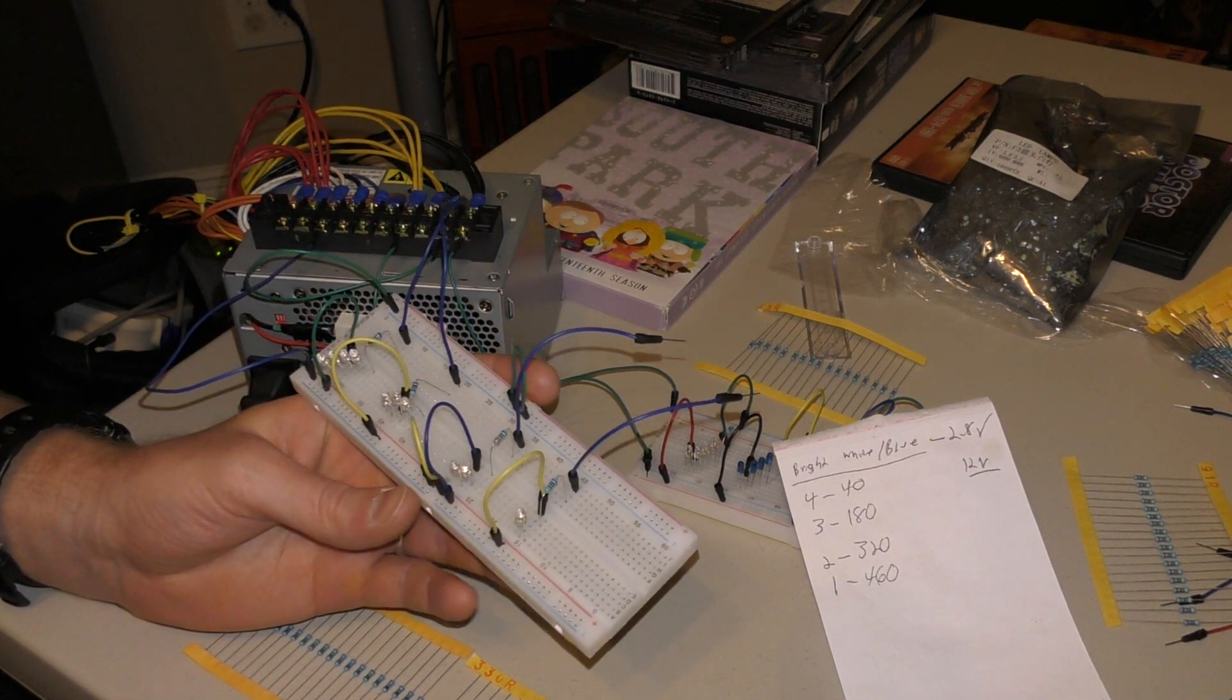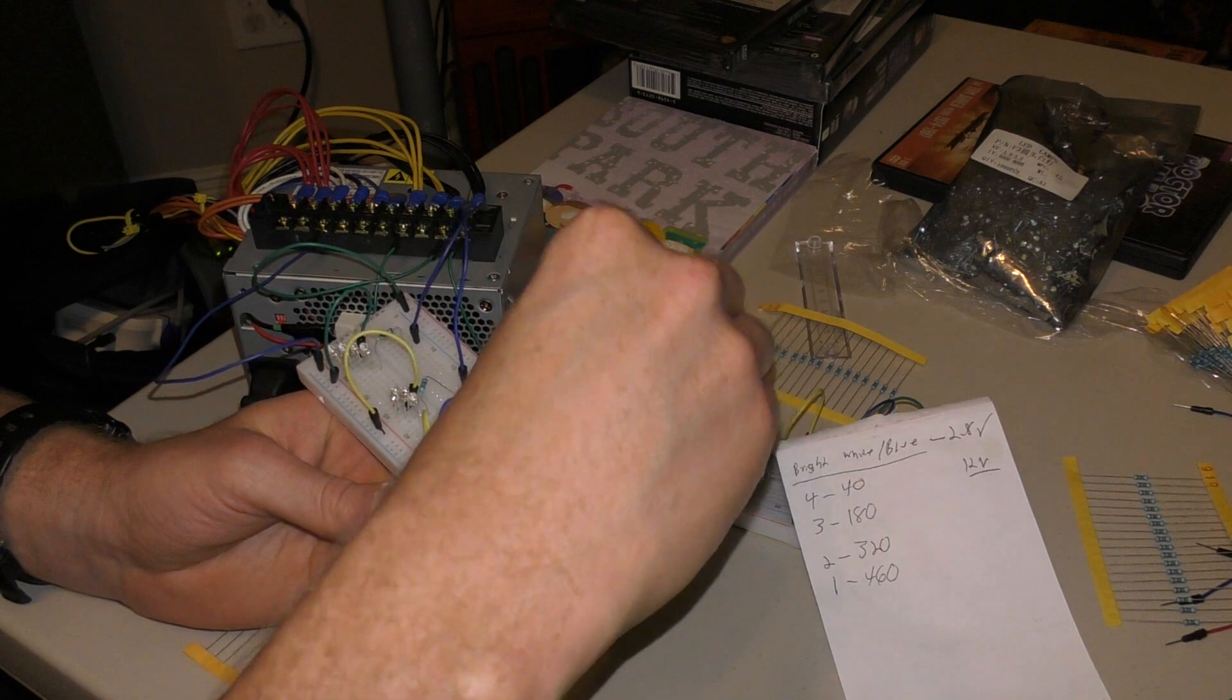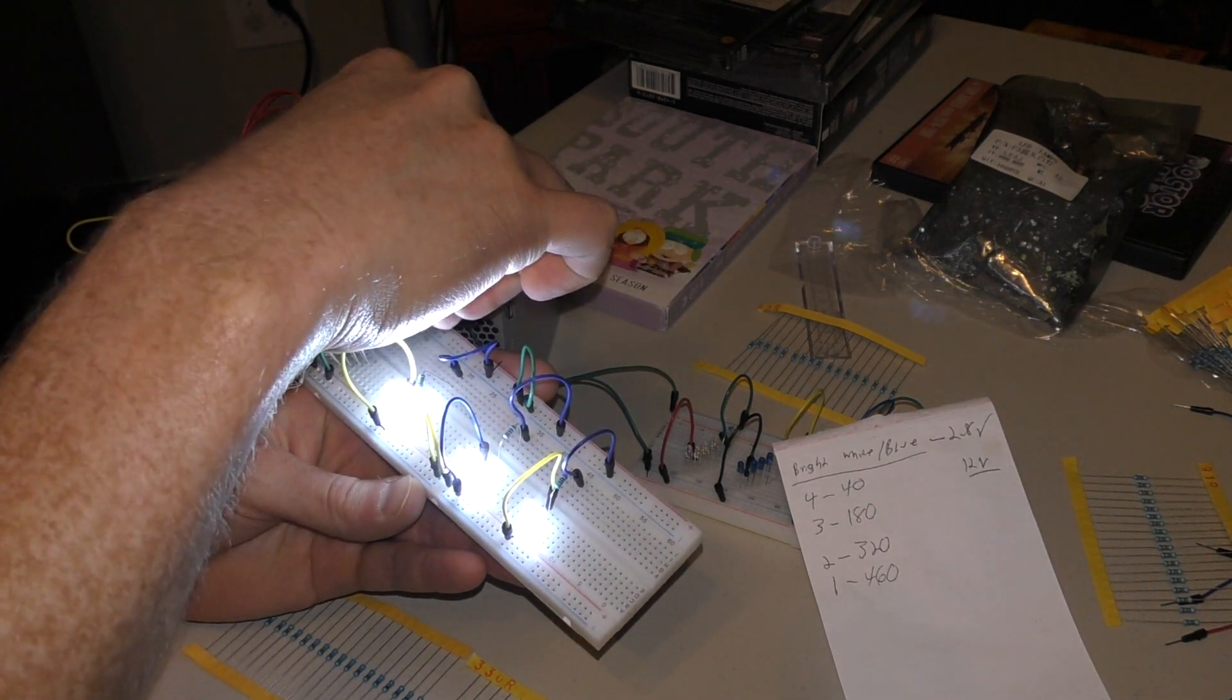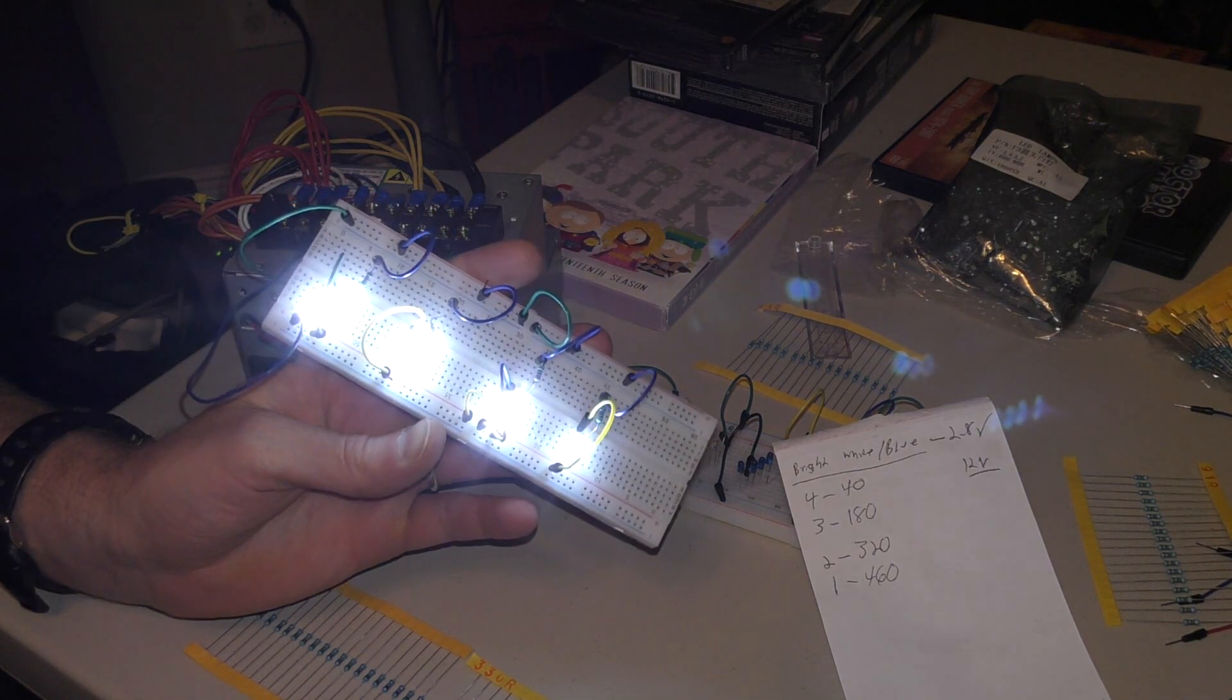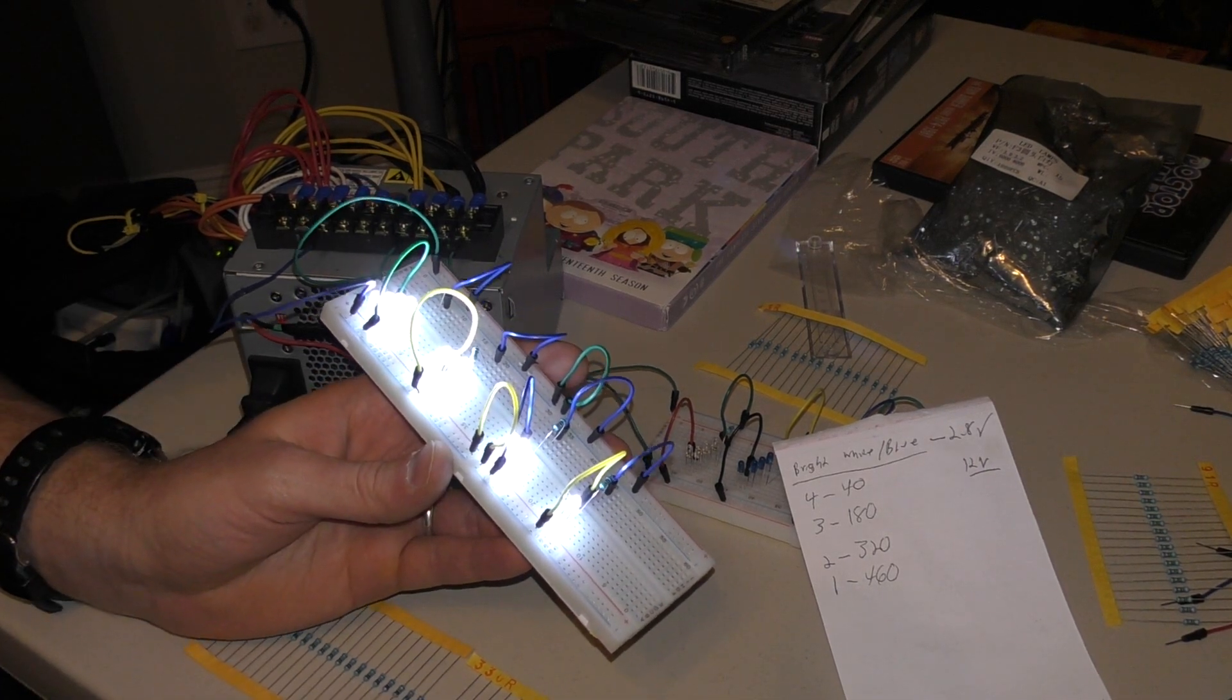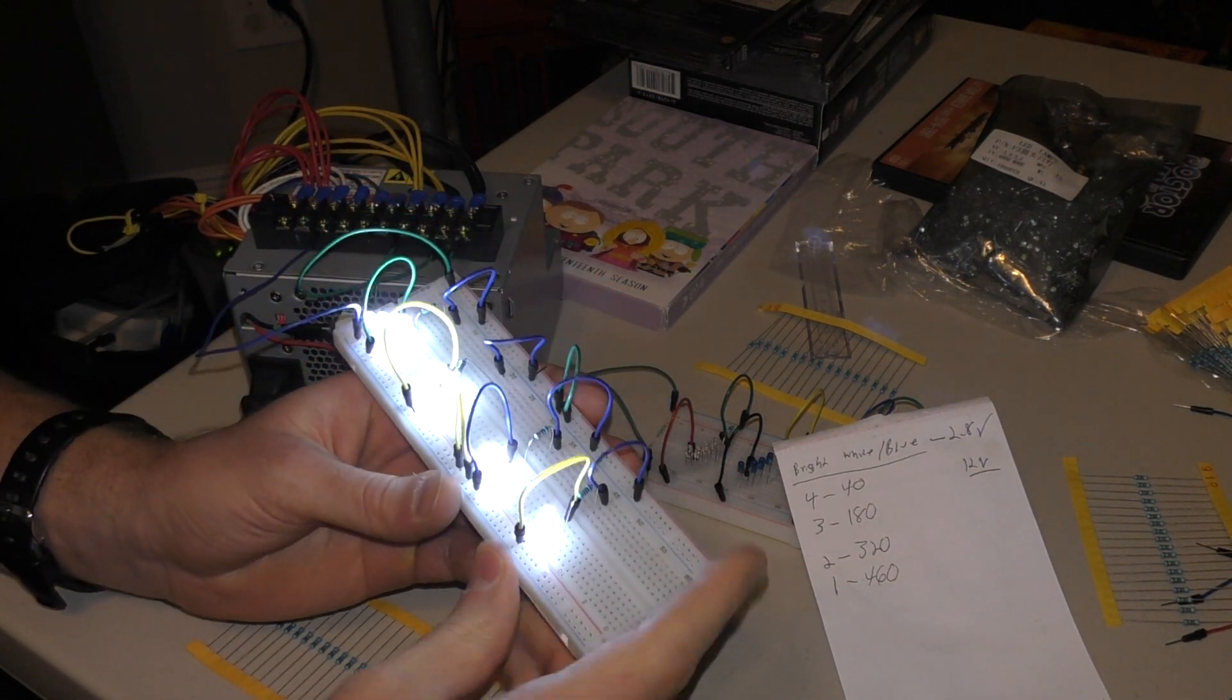So we hook up the one, you see it's bright and crazy. Hook up the two, it is bright and crazy. Three, four. I don't know if you can see it but they are all the same brightness and that's what we want. This right here represents the basic circuit that we're going to use to light the entire city.